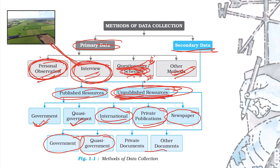You will get published data in revenue records — how much revenue is going to be in the department, and the government land revenue. Land revenue means land grants. However, some data they don't publish; they keep it secret in the room.